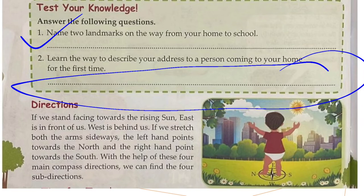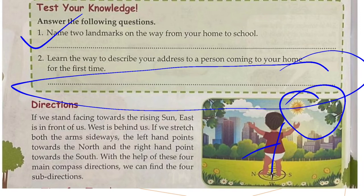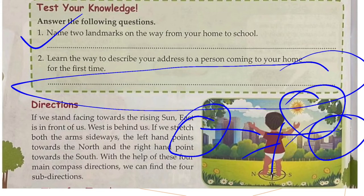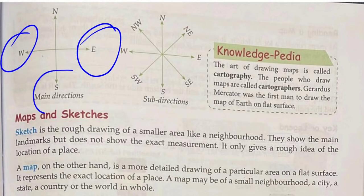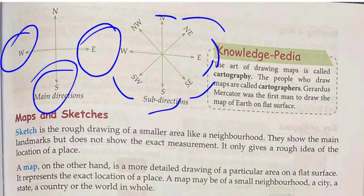Now, directions: if we stand facing towards the rising sun, east is in front of us — E for east, यानि पूरब. Behind us is west. If we stretch both arms, one side is south and the other is north. With the help of these four main compass directions, we can find four sub-directions: North-East (NE) is between north and east, South-East (SE) between south and east, South-West (SW) between west and south, and North-West (NW).